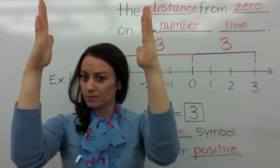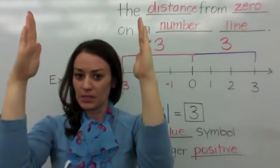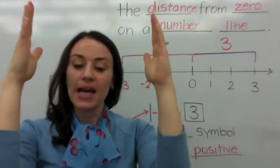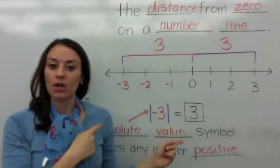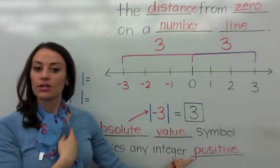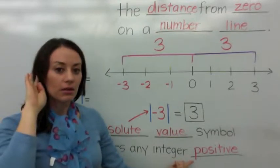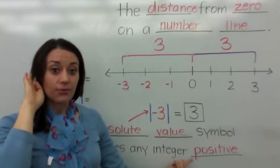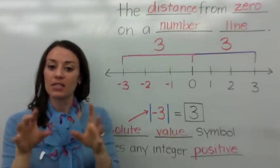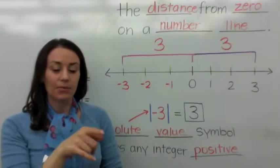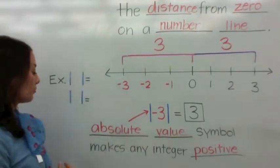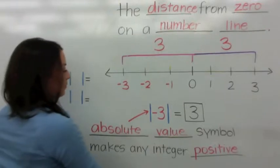Make this with your arms — this is the absolute value symbol. They're two straight lines, and this says it makes an integer always positive. Because what is positive? Distance is positive. It's always positive. So let's go through some simple examples.